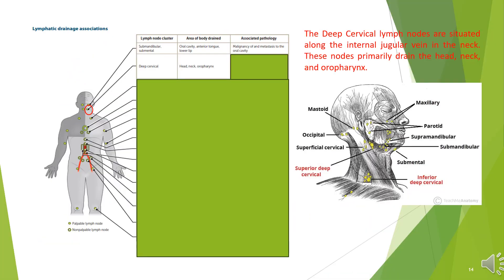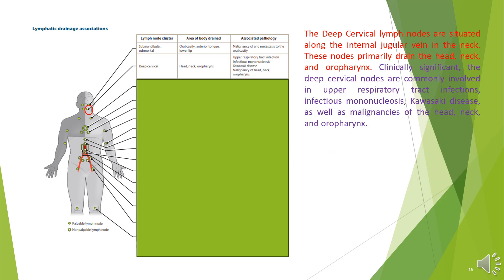Next lymph node cluster: deep cervical. The deep cervical lymph nodes are situated along the internal jugular vein in the neck. These nodes primarily drain the head, neck, and oropharynx. They are commonly involved in upper respiratory tract infections, infectious mononucleosis, Kawasaki disease, as well as malignancies of the head, neck, and oropharynx.